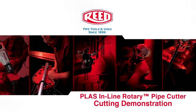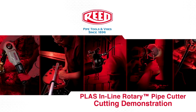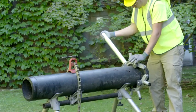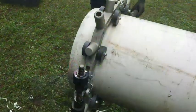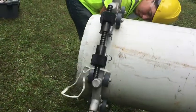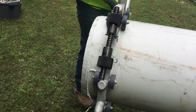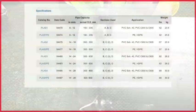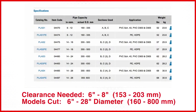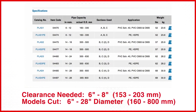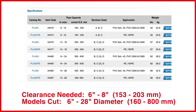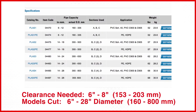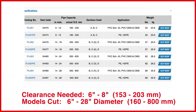Reed's PLAS inline rotary pipe cutter is an excellent tool for cutting PVC or PE pipe in the trench or above ground. Each cutter needs just six to eight inches of clearance to circle the pipe. Models are available for ranges of six inch up to 28 inch diameter pipe. This video will show cuts on both PE and PVC.